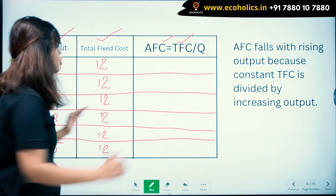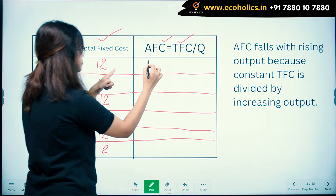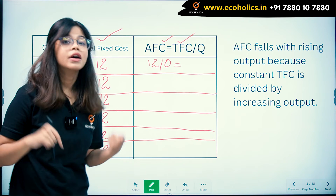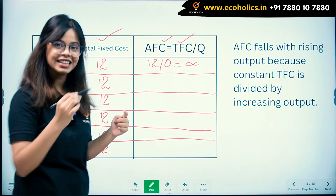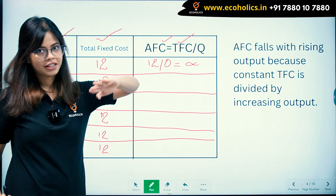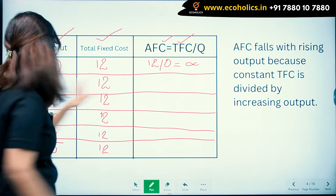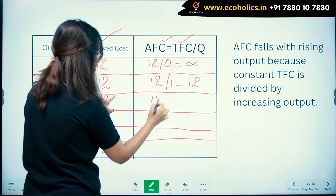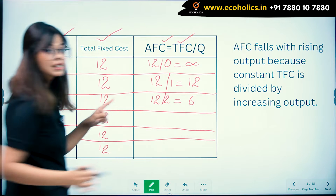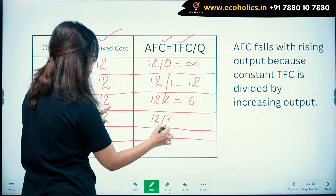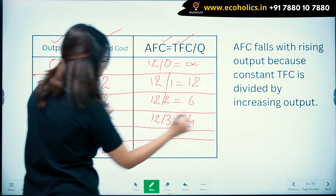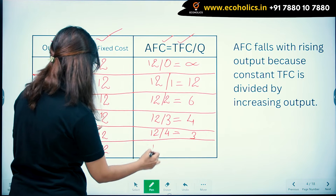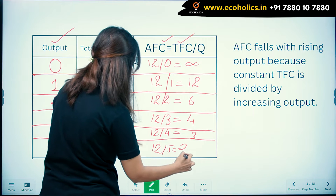TFC is 12 at every level of output because TFC does not change with increasing output. Applying the formula AFC = TFC / Q: 12 divided by 0 is infinity; 12 divided by 1 is 12; 12 divided by 2 is 6; 12 divided by 3 is 4; 12 divided by 4 is 3; and 12 divided by 5 is approximately 2.40.